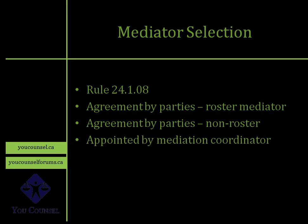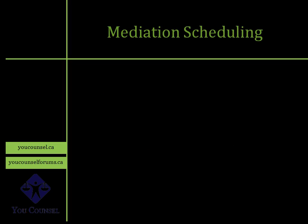The third option is appointment by the Mediation Coordinator. This happens when parties are unable to agree on a specific mediator — one party proposes certain mediators, the other rejects them and vice versa. At that point, one party writes to the Mediation Coordinator at the court asking them to appoint a mediator, and the Mediation Coordinator imposes one.